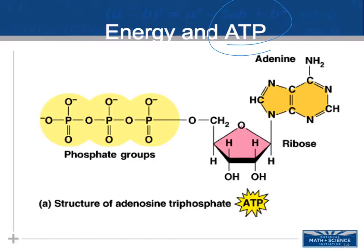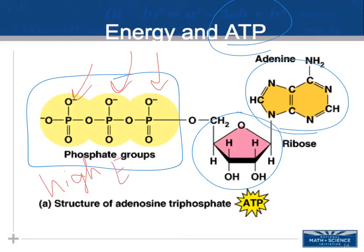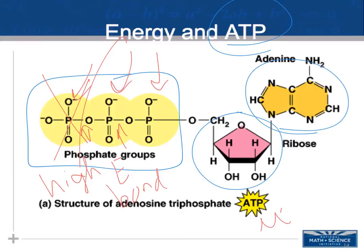Those three phosphate groups are held together with very weak bonds, because all of the phosphate groups have a negative charge and are repelling one another. Even though they are weak bonds, they are considered high-energy bonds. When one phosphate group is removed, energy is released — it's an exergonic reaction. You can see this in the picture: when the phosphate is removed from ATP, there is a release of energy with a negative enthalpy of −7.3.